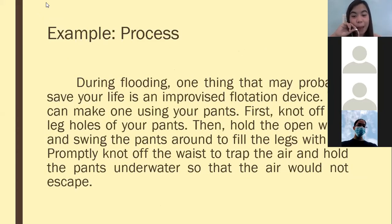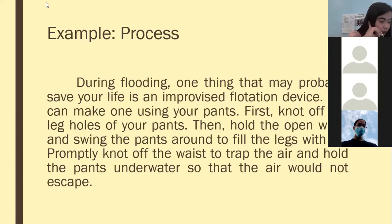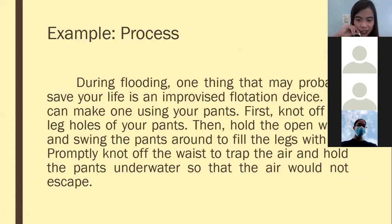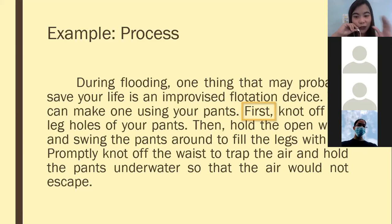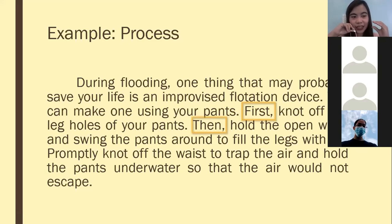For process, the sample paragraph's signal words are easier to identify. Students identified 'first' and 'then' — 'first' signals the first step, and 'then' means 'next,' connecting subsequent steps. Those are the signal words for process.